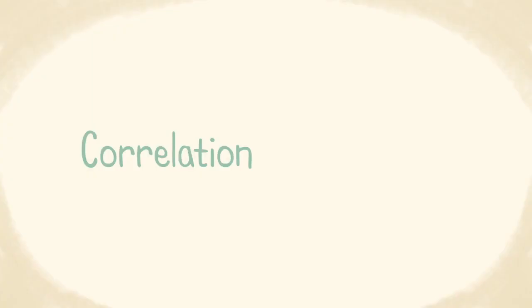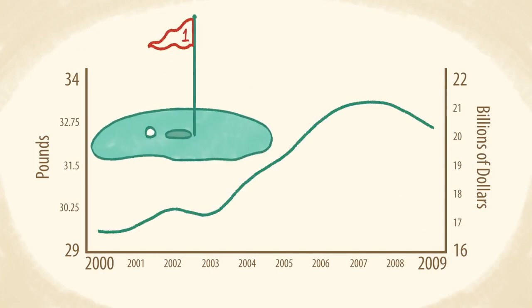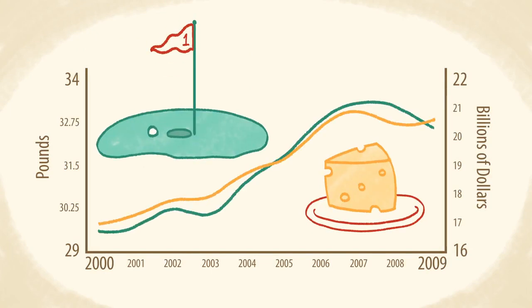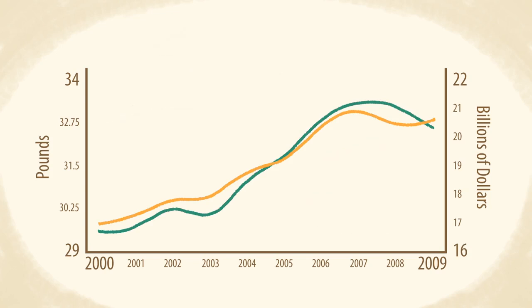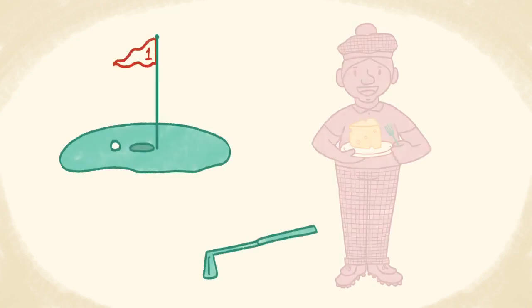Correlational evidence can be powerful and useful, but it can be easy to confuse correlation with causation. For example, this figure shows that both golf course revenues and per capita consumption of cheese increased from 2000 to 2009. However, just because increases in these two things are correlated doesn't mean that playing golf causes people to eat more cheese.